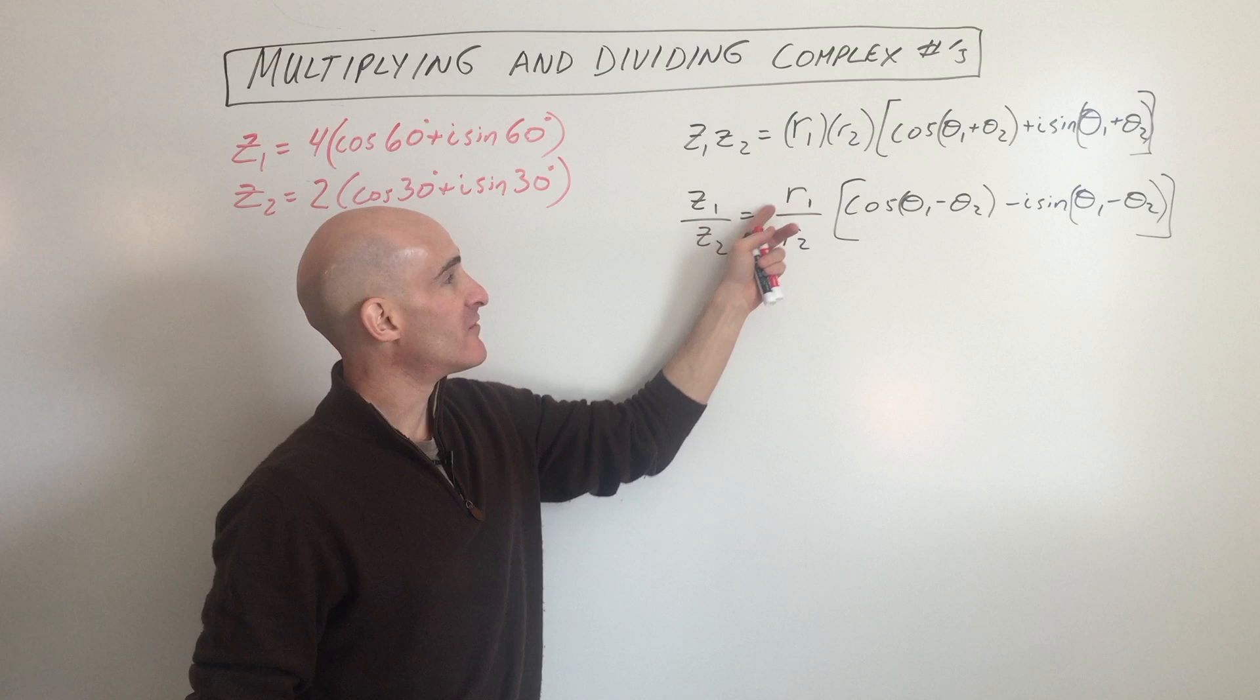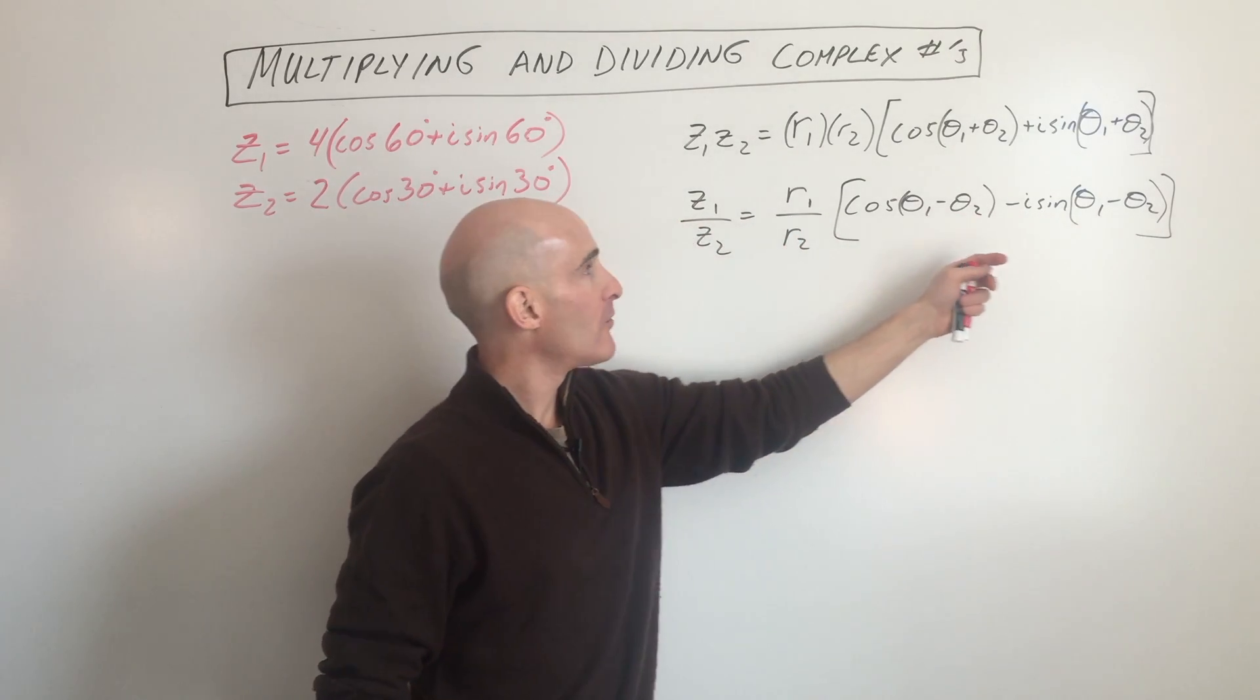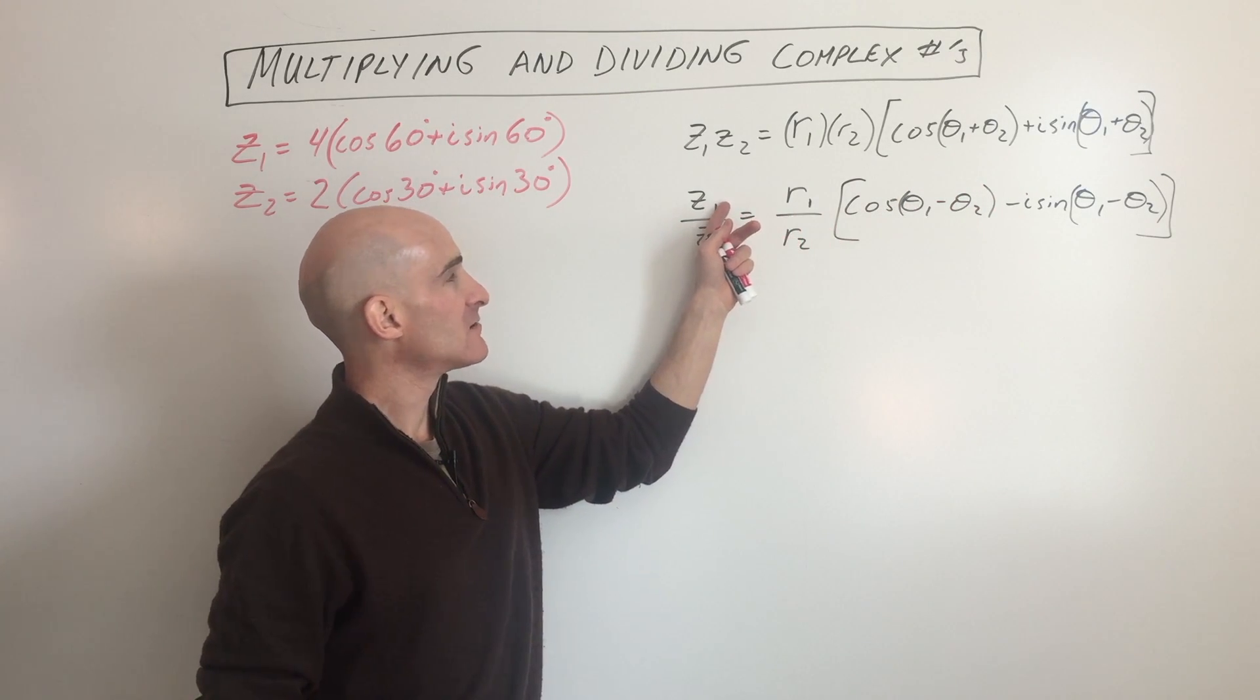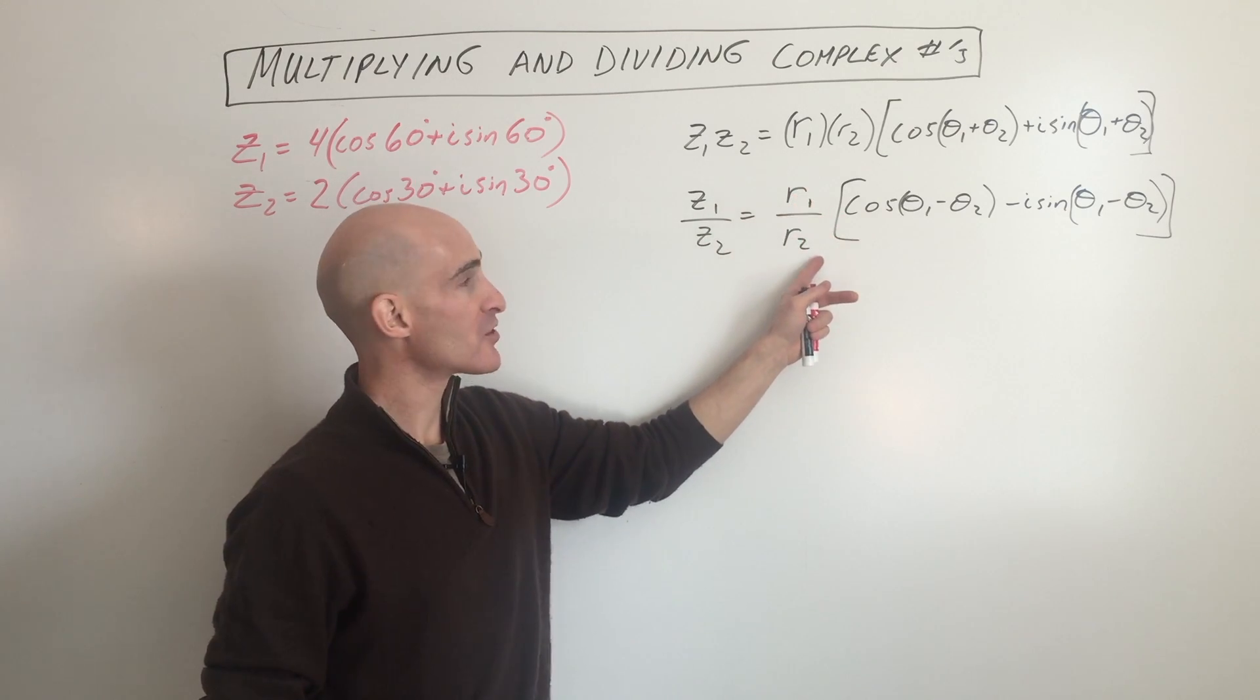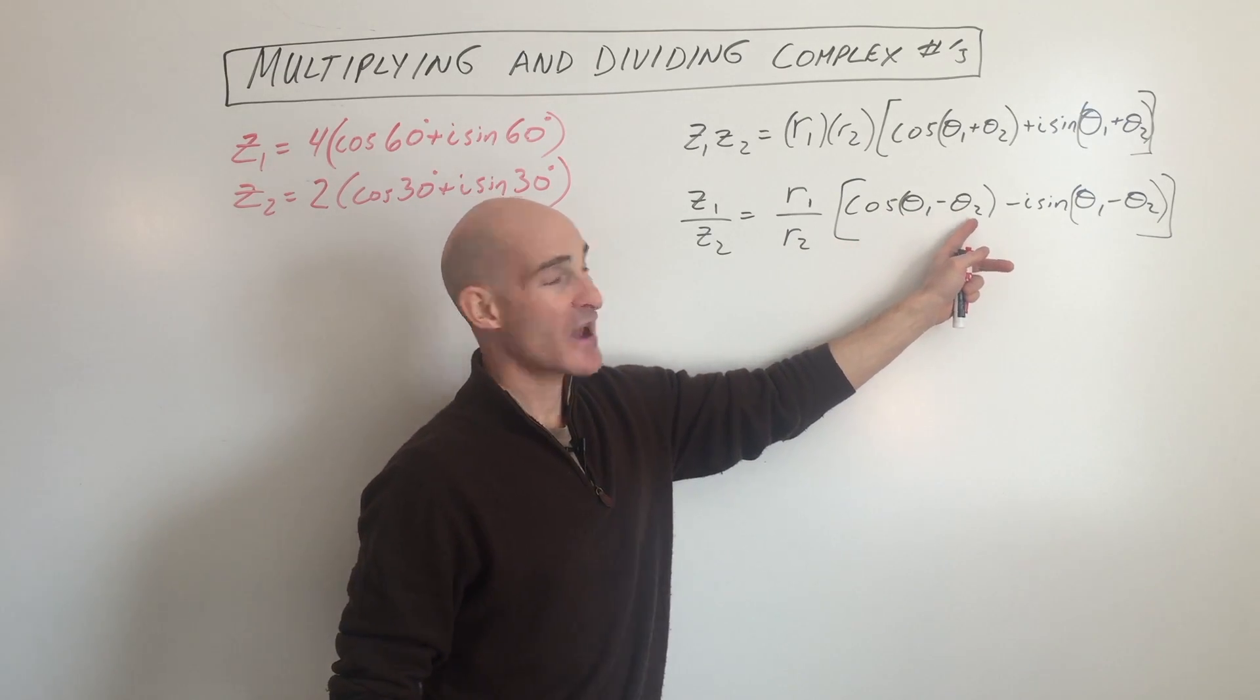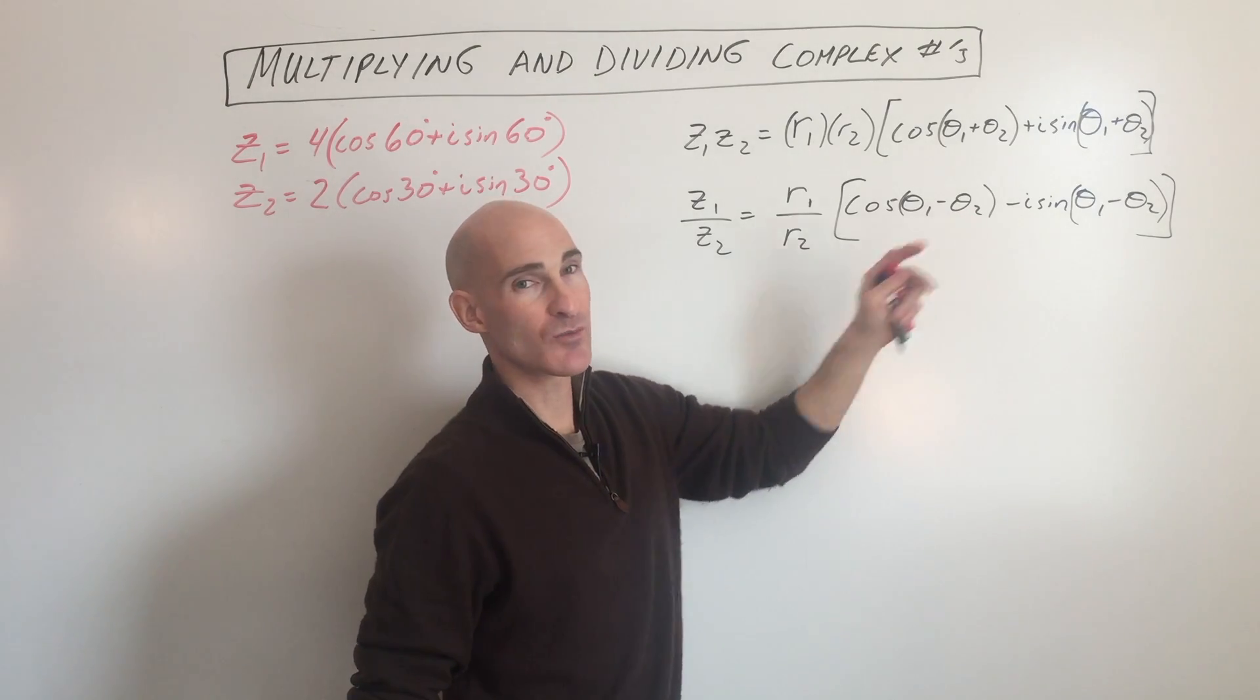But when you divide, you divide the r values and you subtract the angles. Now addition is commutative, but subtraction is not commutative. So you want to be careful when you're dividing. If you're dividing z1 by z2, you want to make sure that r1 is in the numerator, r2 is in the denominator, and that the angle of the first complex number is subtracting the angle of the second complex number. So that order is important.